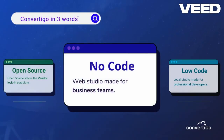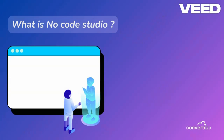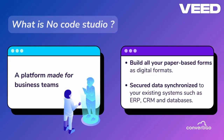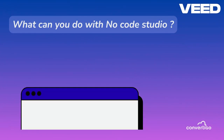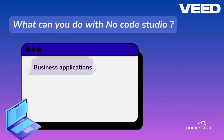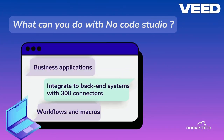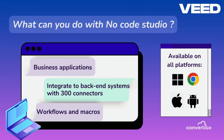The other studio is the no-code studio for business teams. With this studio, you can build all your paper forms into digital format. Data is securely synchronized with your existing systems such as ERP, CRM, and databases. You can build business applications with 300 connectors, workflows, and macros.